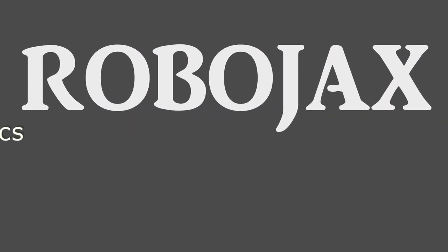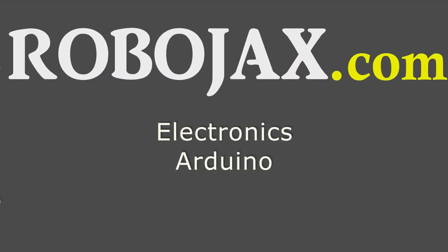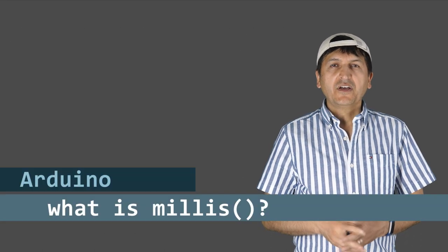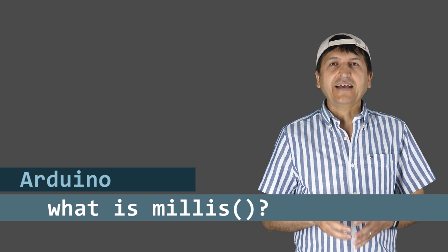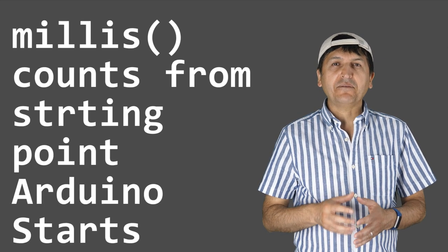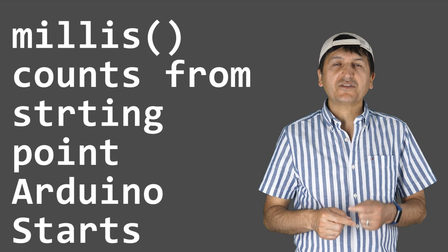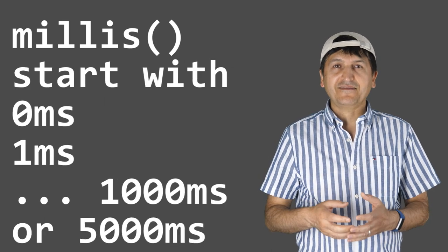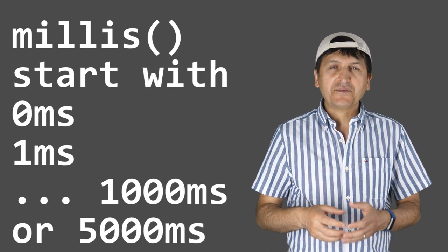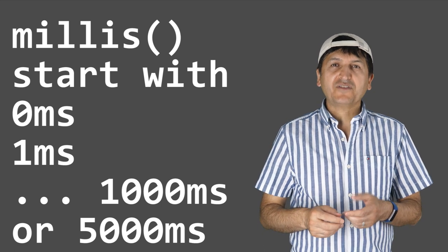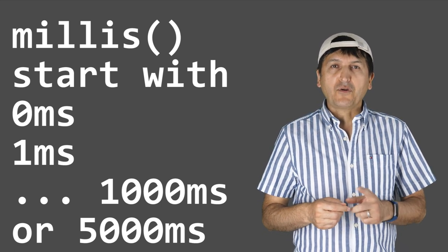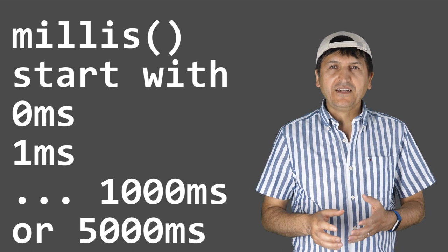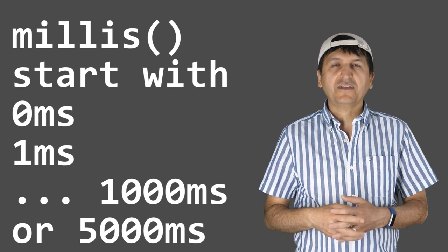So what is millis and why do we have to use it? Millis is an internal function from Arduino that calculates the time in milliseconds from the starting point when the Arduino program runs. As soon as you power up the Arduino, millis starts at zero and goes up every millisecond. For one second you will read 1000, and for five seconds you will read 5000, and so forth.